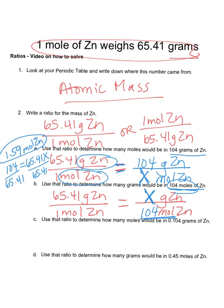My unknown now is the grams. So when I cross multiply, I'm going to have 65.41 times 104 equals 1 times X, which just equals X. So when I solve all that, I get 6,803 grams of Zn is going to be my answer.